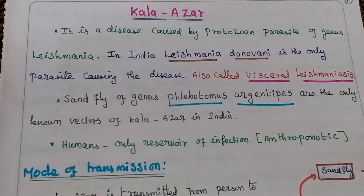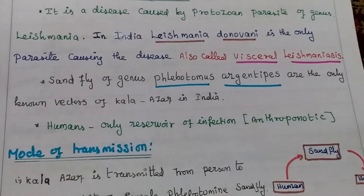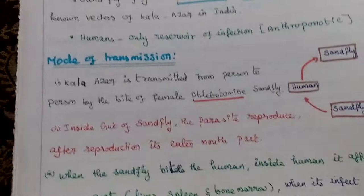Sandfly of the genus Phlebotomus are the only known vectors of Kala Azar in India. Humans are the only reservoir of this infection. Kala Azar is transmitted from one person to another by the bite of a female sandfly.